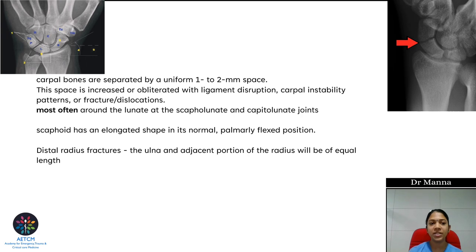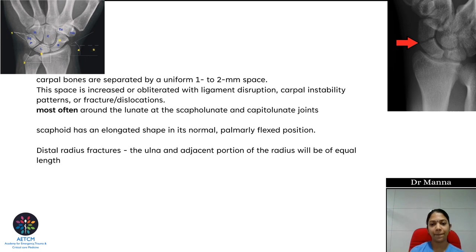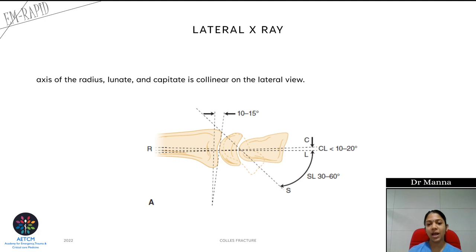The scaphoid has an elongated shape, and scaphoid fractures are often missed. On the AP X-ray, the radial styloid process is about 1 cm distal to the ulnar styloid process. On the lateral X-ray, we see the distal end of the radius, then the lunate and capitate bone. These are all collinear in the lateral view and the articular surface is shaped like a C. This collinearity will be disrupted if a fracture occurs.